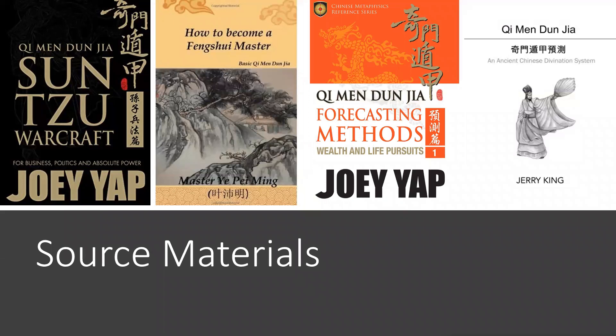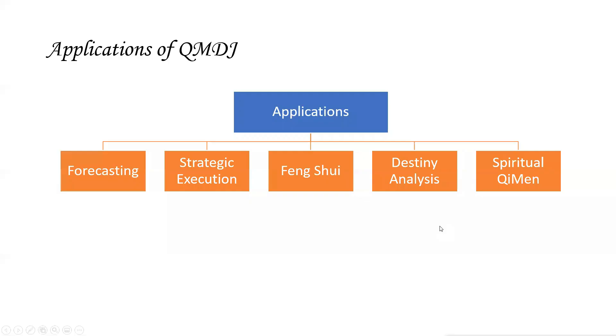Let us look into what source materials our sharing will rely upon. We have Dr. Joey Yap, who has published multiple books on Chimun. The books I may refer to are the Forecasting Methods and also the Warcraft. There are also thinner, easier-to-read books in simpler English, such as Yee Pei Ming's How to Become a Function Master — basic Chimun. There is also another book by Jerry King, who resides in Canada, and has published a few books on Chimun as well.